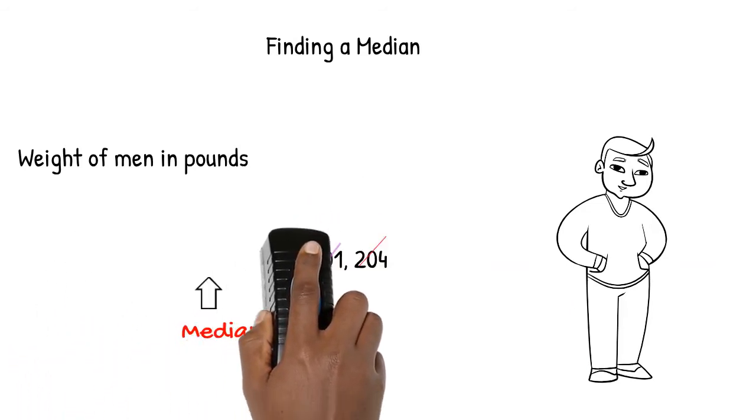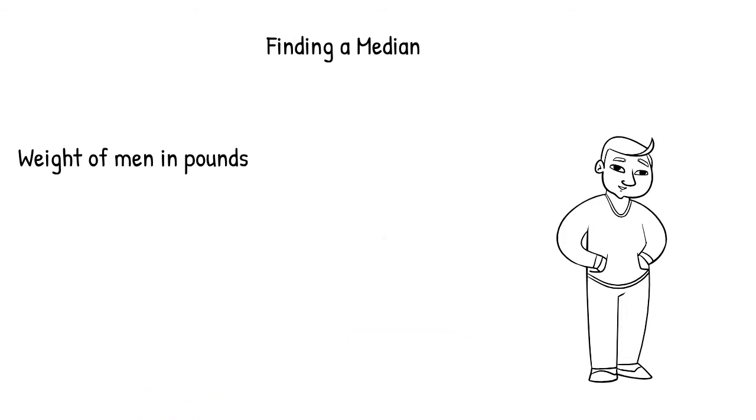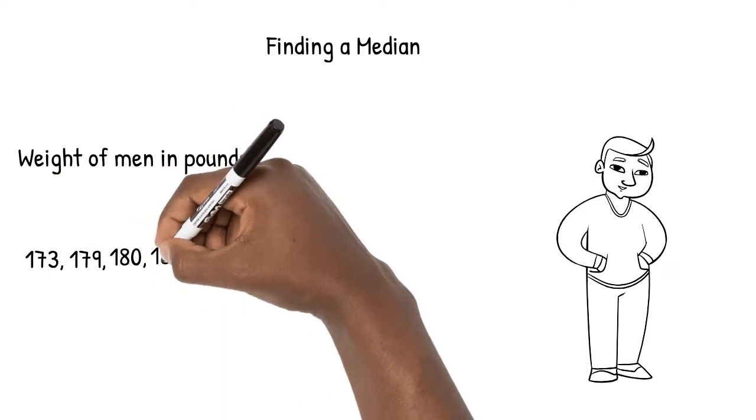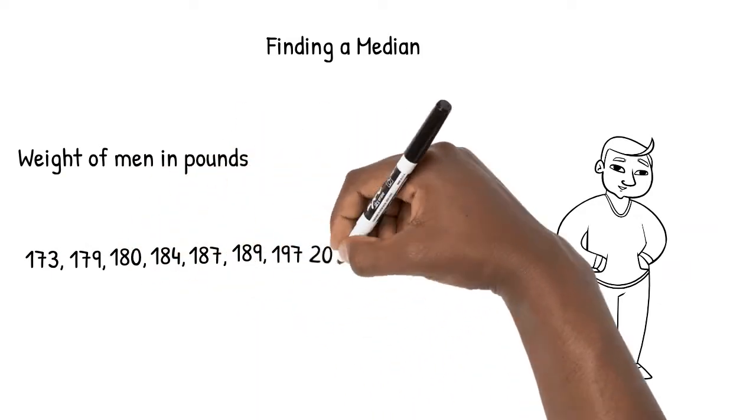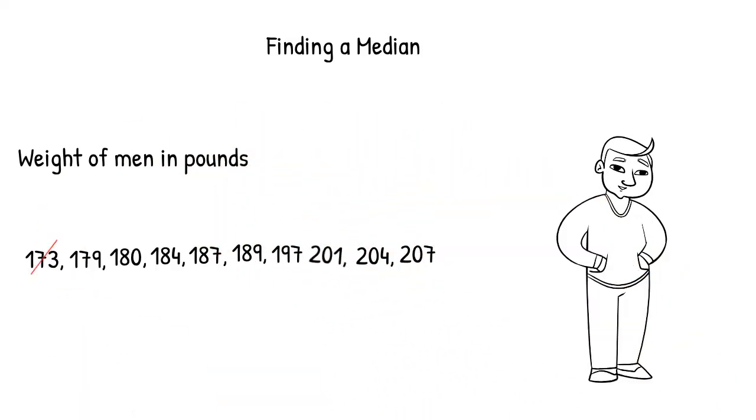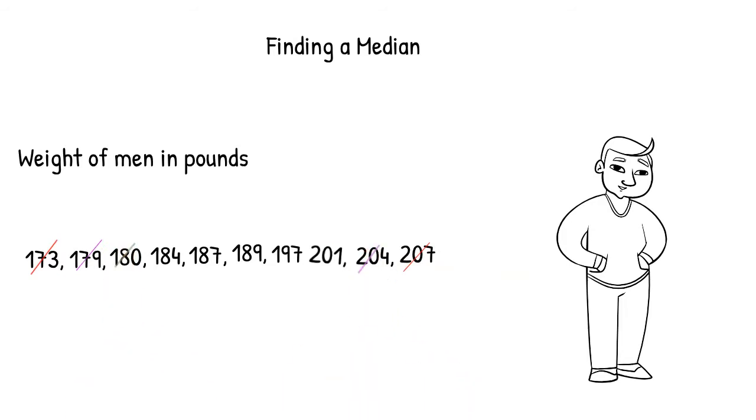Now you may be wondering, what if a single number wasn't left in the middle because we had an even number of cases? Let's see an example where this happens. Like before, we cross off numbers from the ends, but notice that two numbers are left in the center.